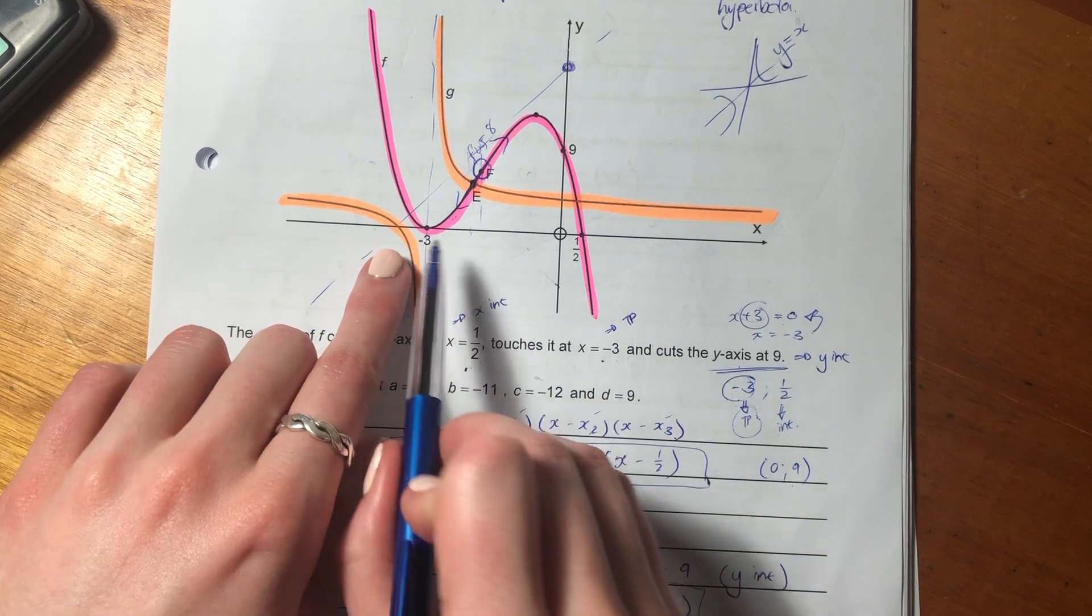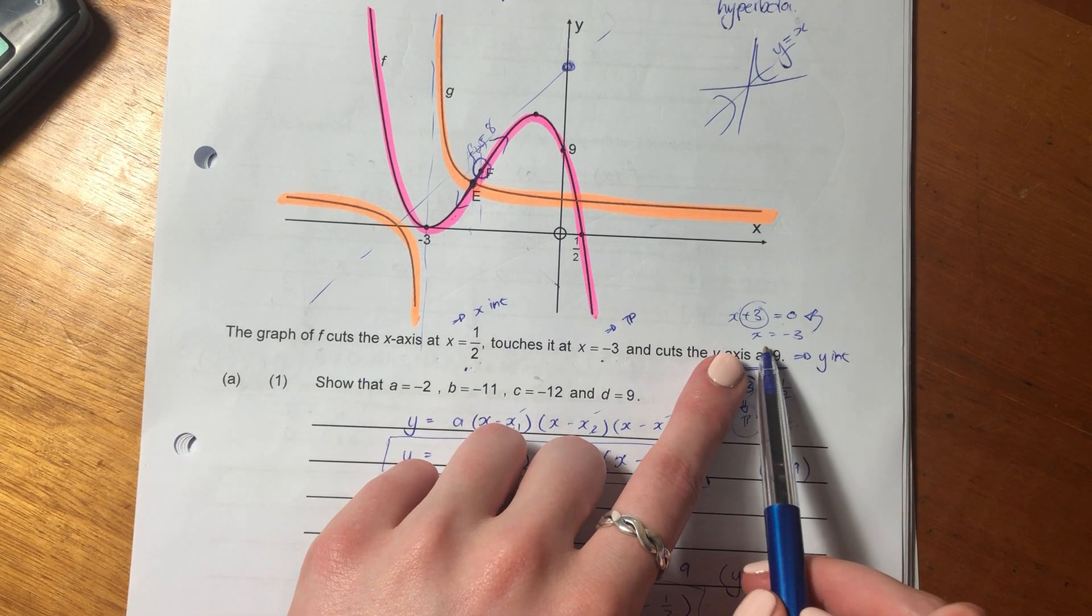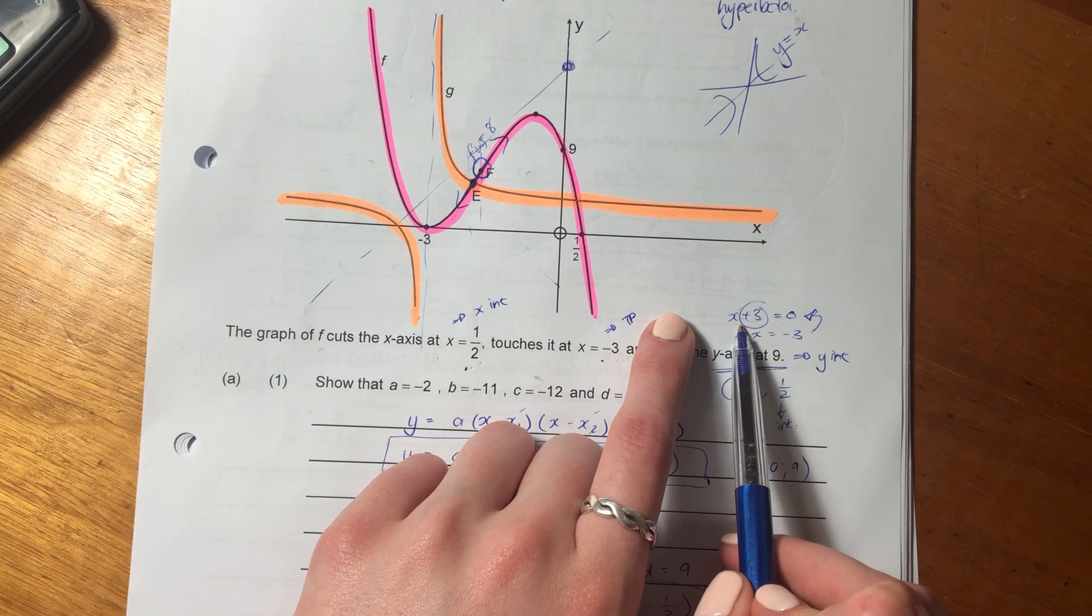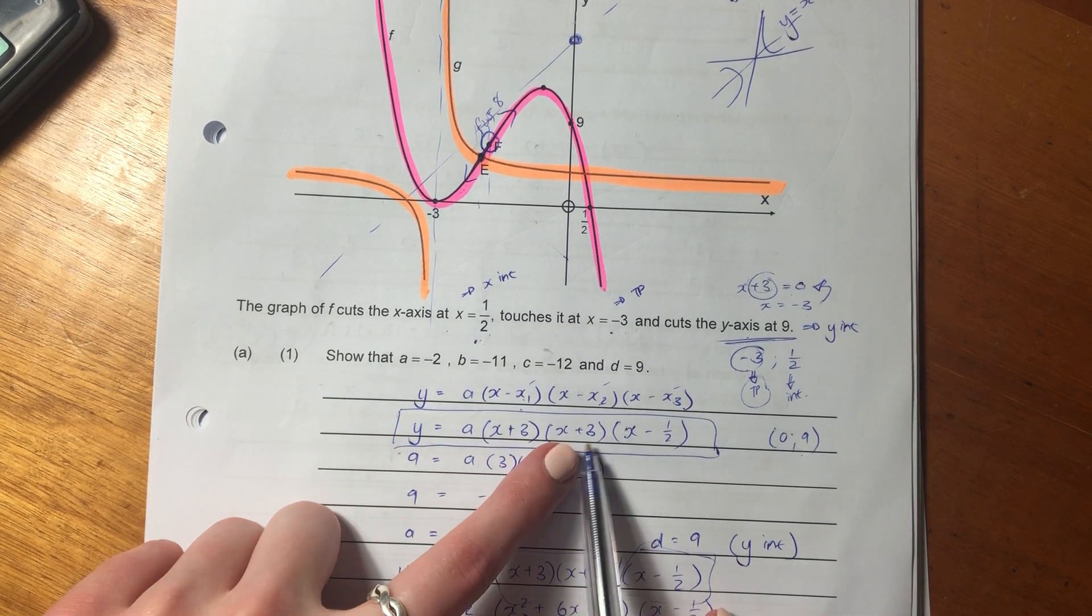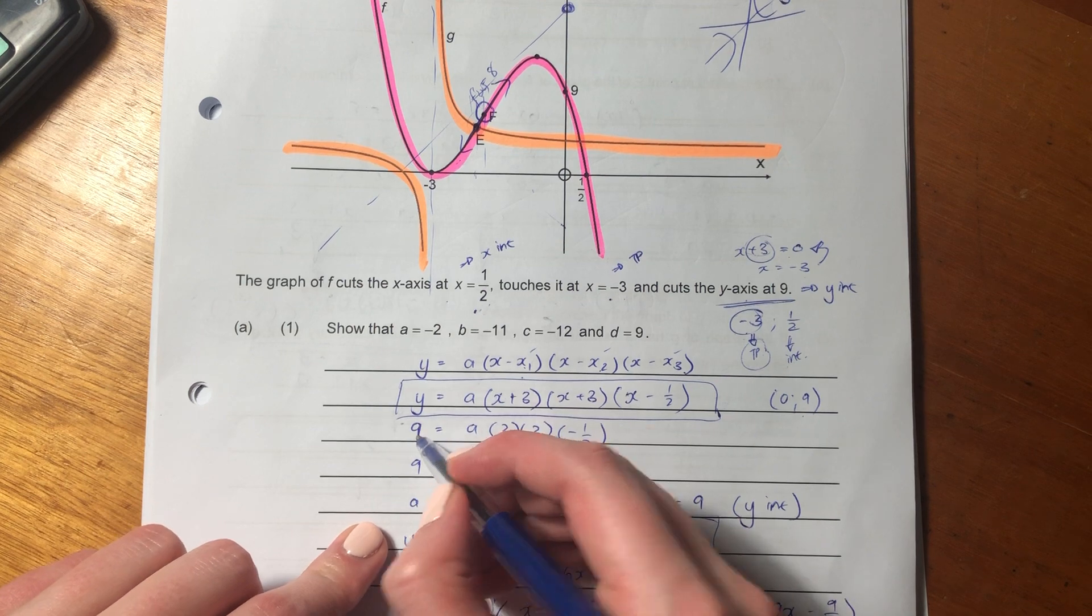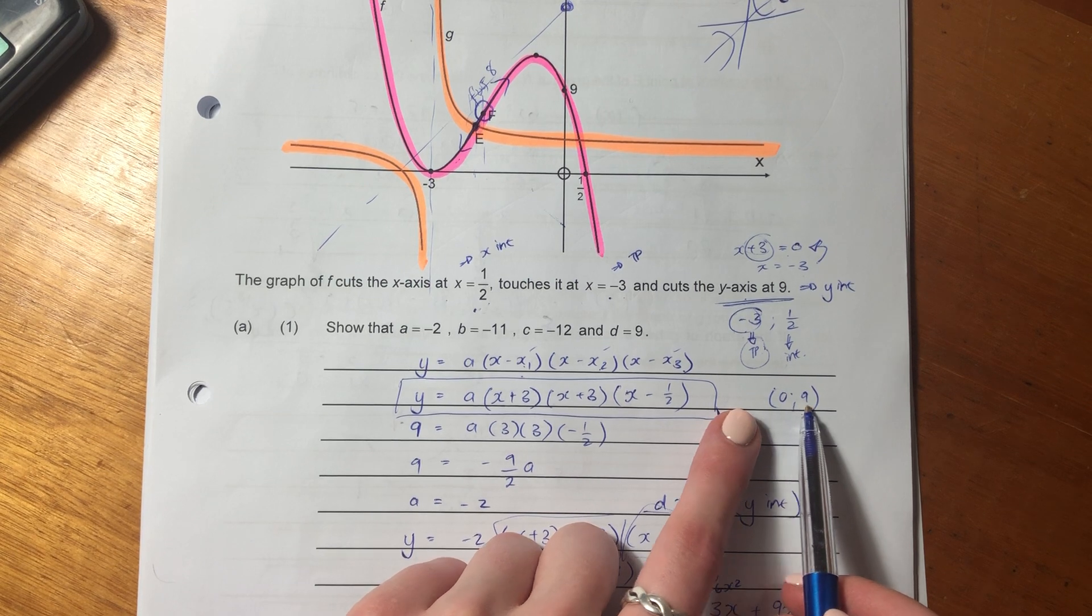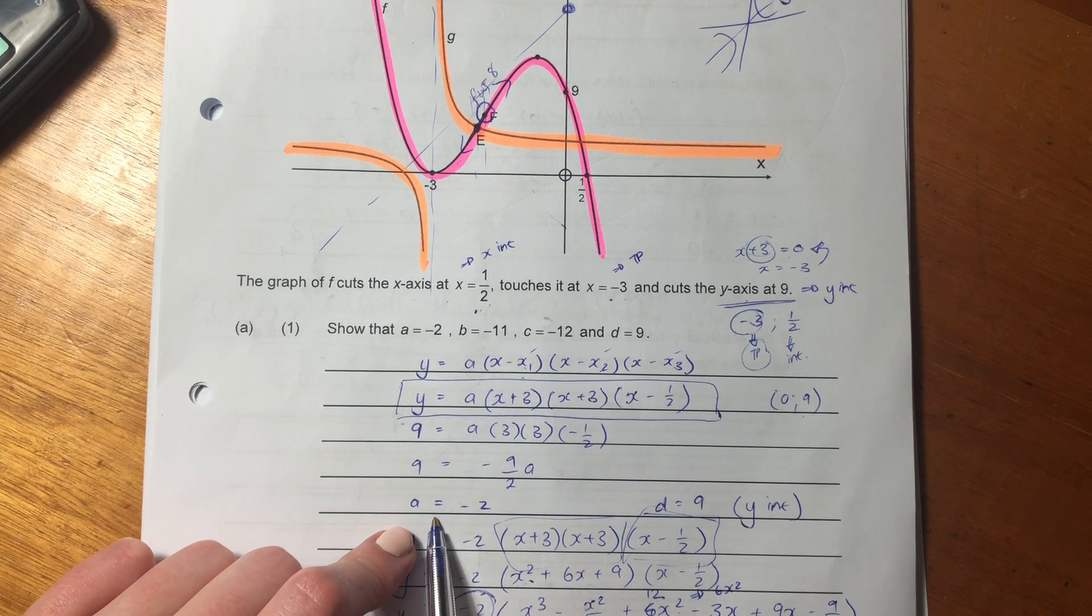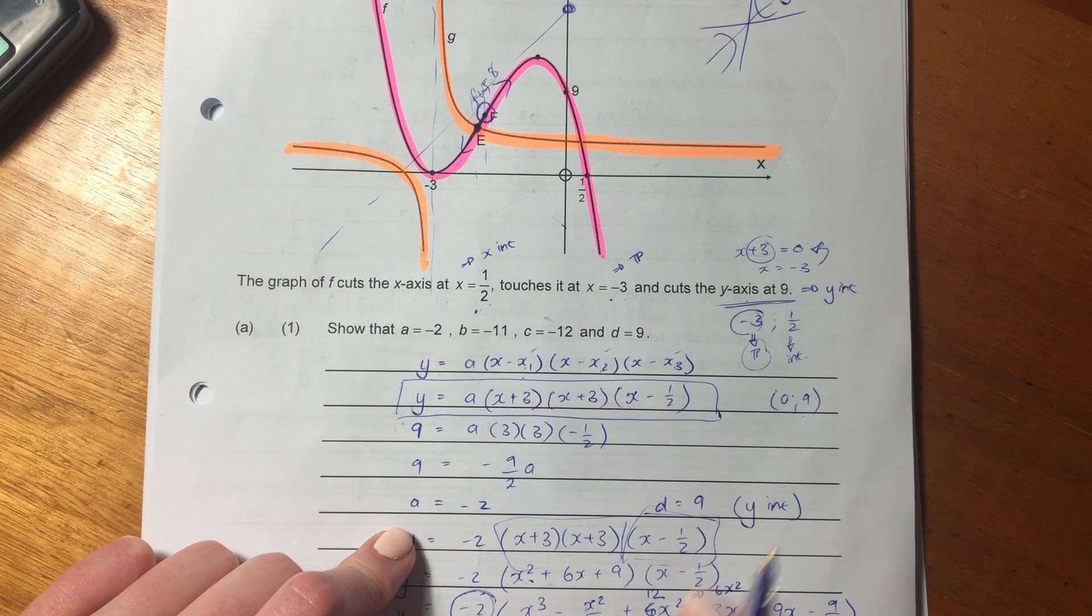And then the other x that you haven't used will be a half. Just remember, when we put an intercept or a turning point into here, we put the opposite sign. Because we're saying the x-intercept equals -3, but we want to write it in this form, so bring it to the opposite side, change the side. So you'll see here I've said a(x + 3)(x + 3)(x - 1/2). Then here what I've done is I've said, well, we have a point and we know that this point is 0 and 9 because that is the y-intercept. So I've plugged that in and I have solved for a.